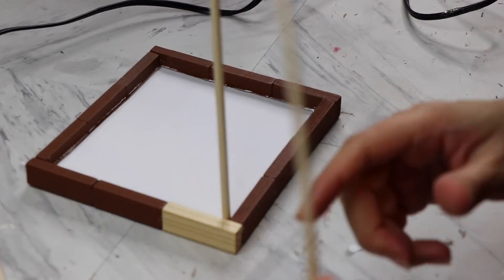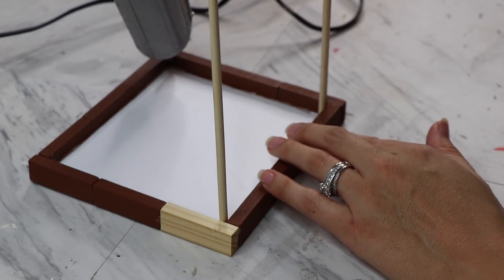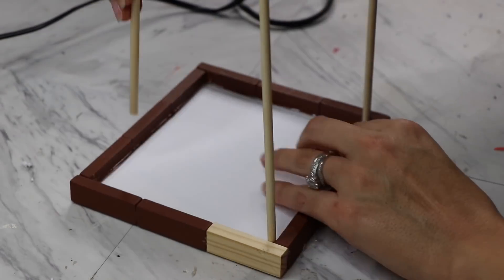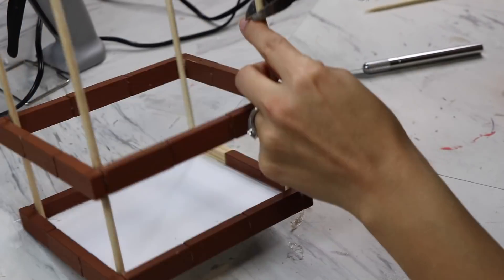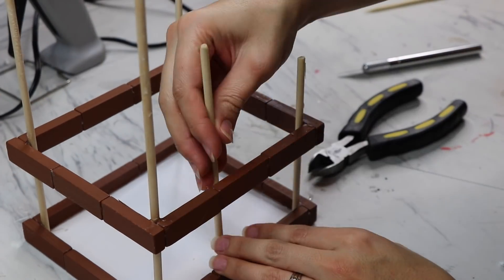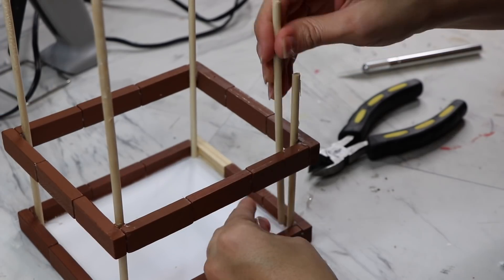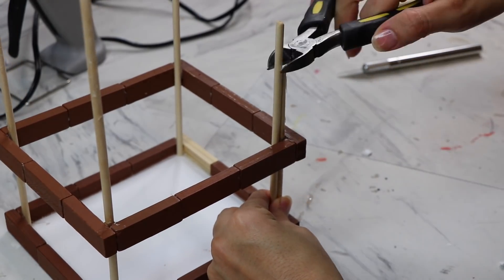Alright, so once I glued down that foam board base, I'm going to take the dowels and glue them to the very corners. This is actually easier than it looks. Once those are glued, just take your second frame and slide it over the wooden dowels and you guys decide how high up or down low you want them.